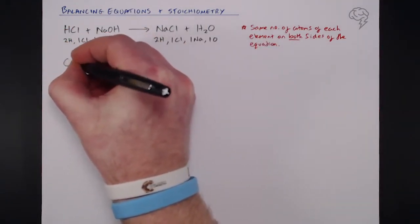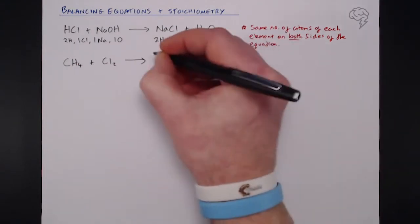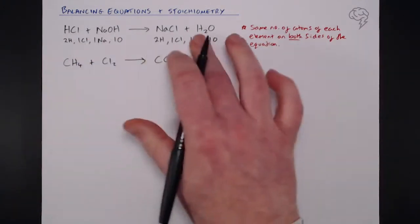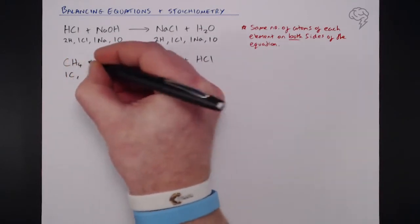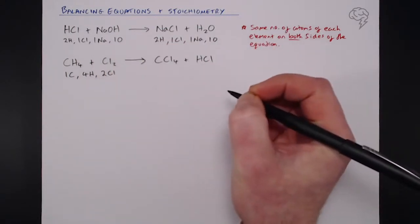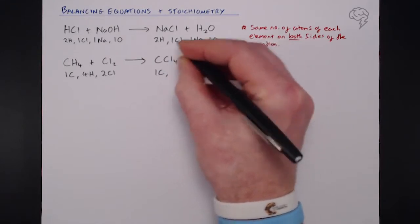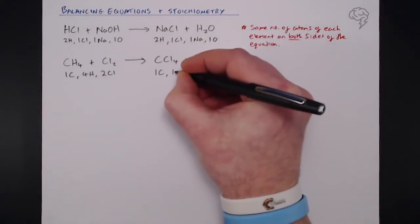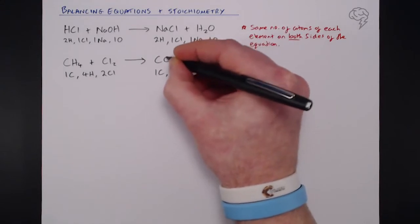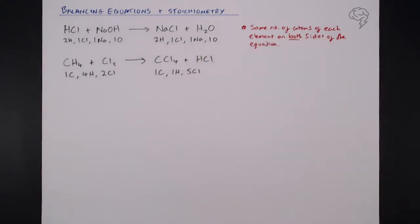Under certain conditions, methane, CH4, will react with chlorine to give CCl4 — carbon tetrachloride — and HCl, hydrochloric acid. Looking at this equation: on the left we have one carbon, four hydrogens, and two chlorines (Cl2 is diatomic). On the product side we have one carbon, but only one hydrogen coming out. And there's chlorine in both products — four chlorines in CCl4 and one in HCl — giving a grand total of five chlorines on the right.